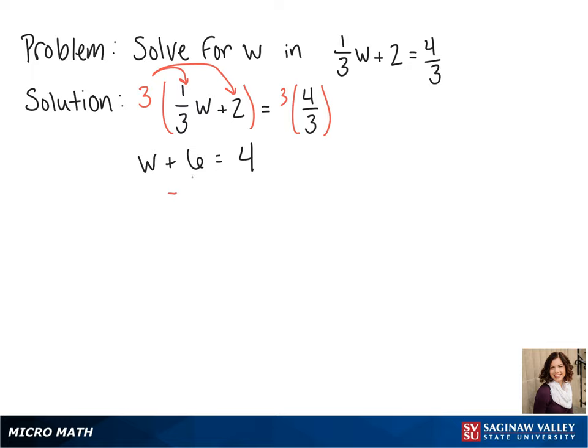Now all we have to do to get w by itself is subtract 6 on each side, and we get w = -2.